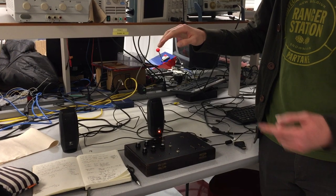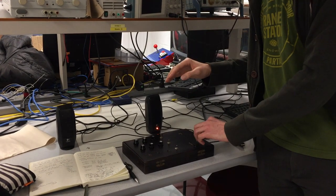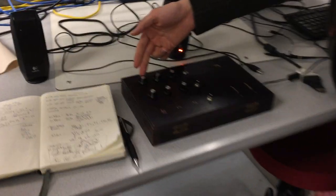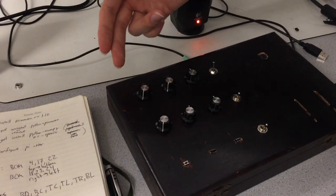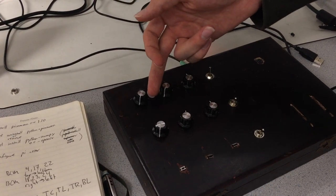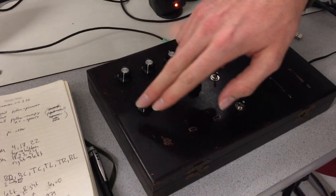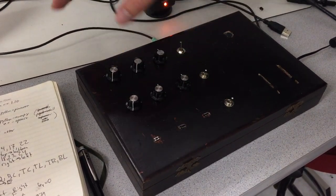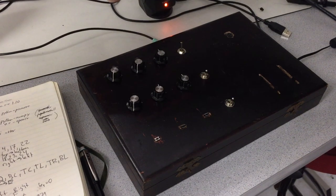We've got various knobs here to modify what our synthesizer is outputting. Here we have the shape of our waveform. This goes between a sine wave to a triangle wave to a square wave to a sawtooth wave. And for each of these waves, we have various amounts of harmonics.